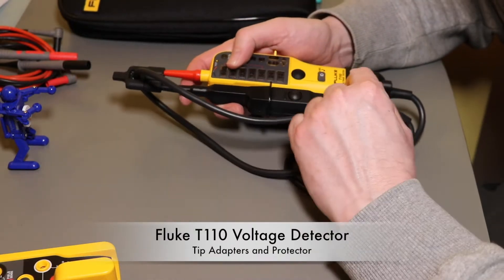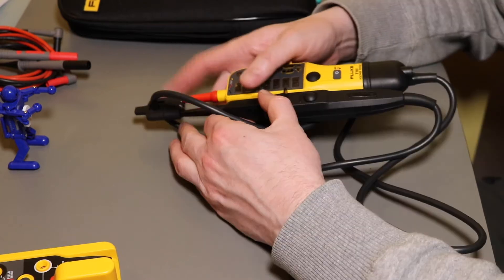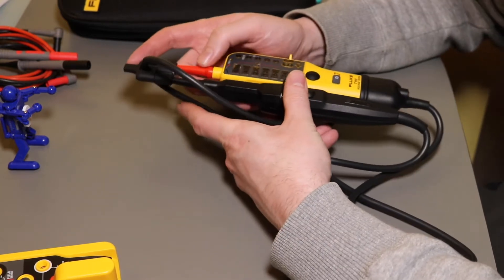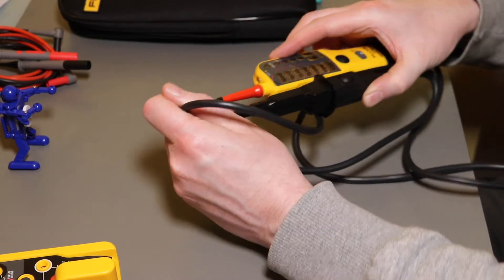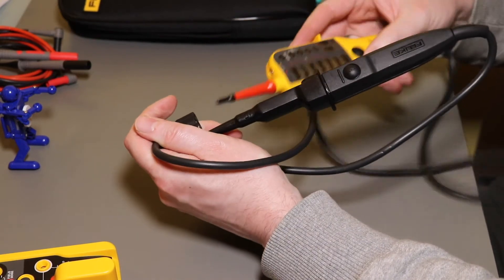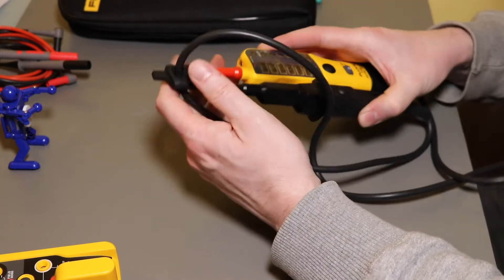This is the Fluke T110 voltage tester and I wanted to show this little probe tip protector that has more functionality than just protecting the probes. Obviously that's its primary function and you can see when it's put in there it mainly stops you stabbing yourself.